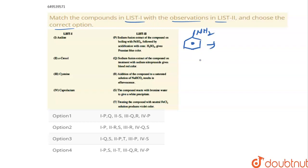So here in list 2, sodium fusion extract of compound boiling with FeSO4, sodium fusion extract addition of the compound, the compound reacts with bromine water, treating compound with neutral FeCl3. Actually aniline is a compound which gives Lassine's test, blue color in Lassine's test due to presence of nitrogen. So compounds which give blue color in complex due to presence of nitrogen, it is in acidified H2SO4, Prussian blue. So for first one, P is the correct answer.